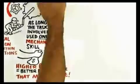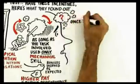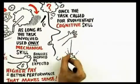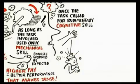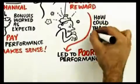But once the task called for even rudimentary cognitive skill, a larger reward led to poorer performance. How can that possibly be?